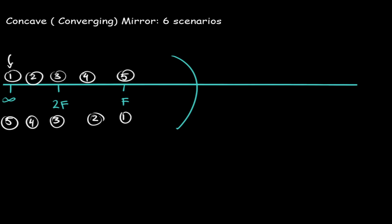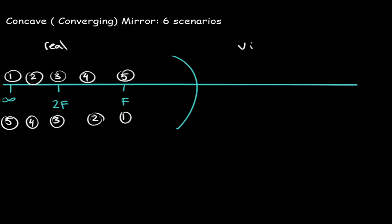The numbers are correlated with each other. If I drew an object at one, its image would form at one on the bottom side. If I drew an object at two, its image would form at two, and so on and so forth. The left hand side of our concave mirror will be considered our real side, and the right hand side will be considered our virtual side.